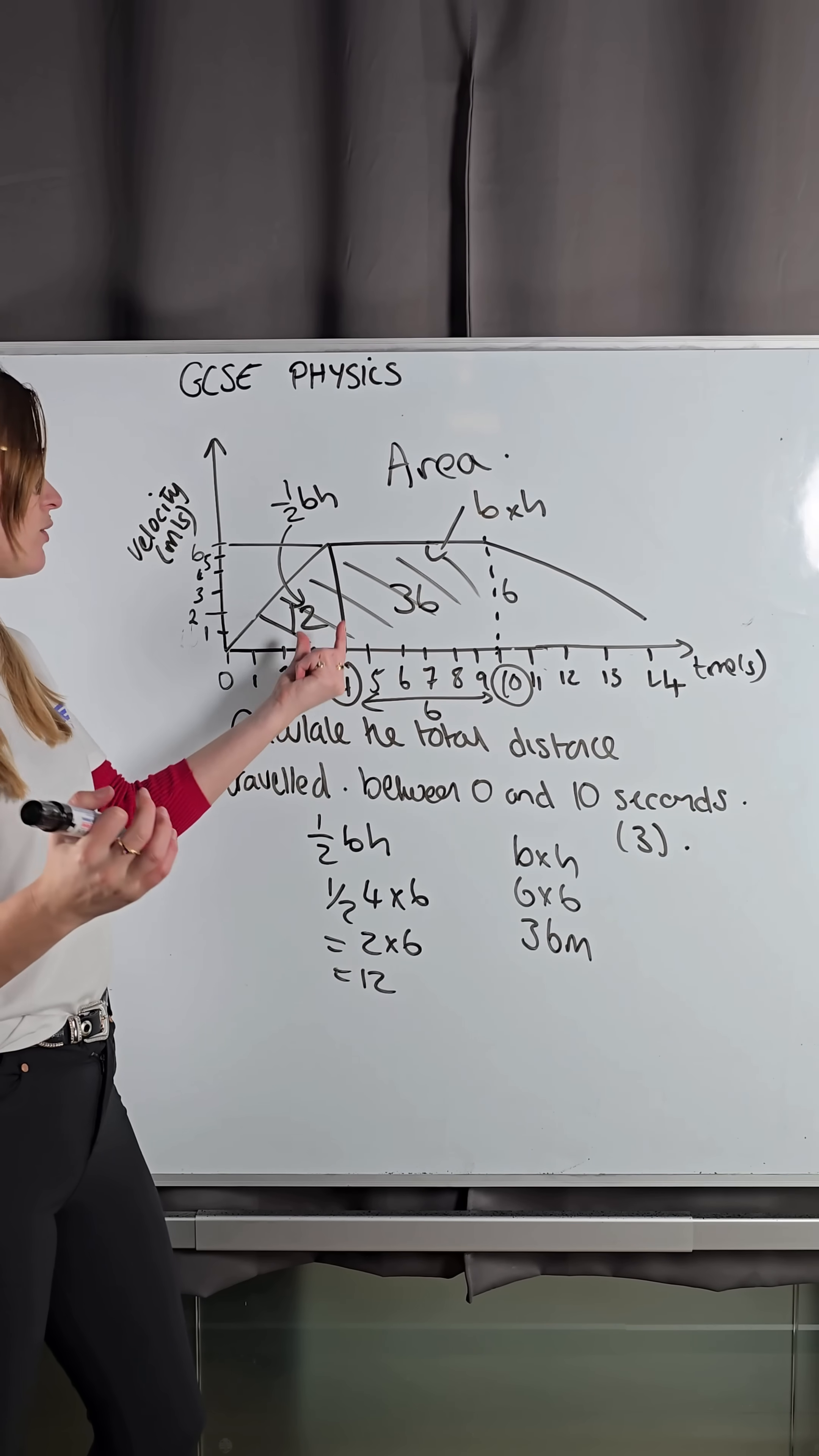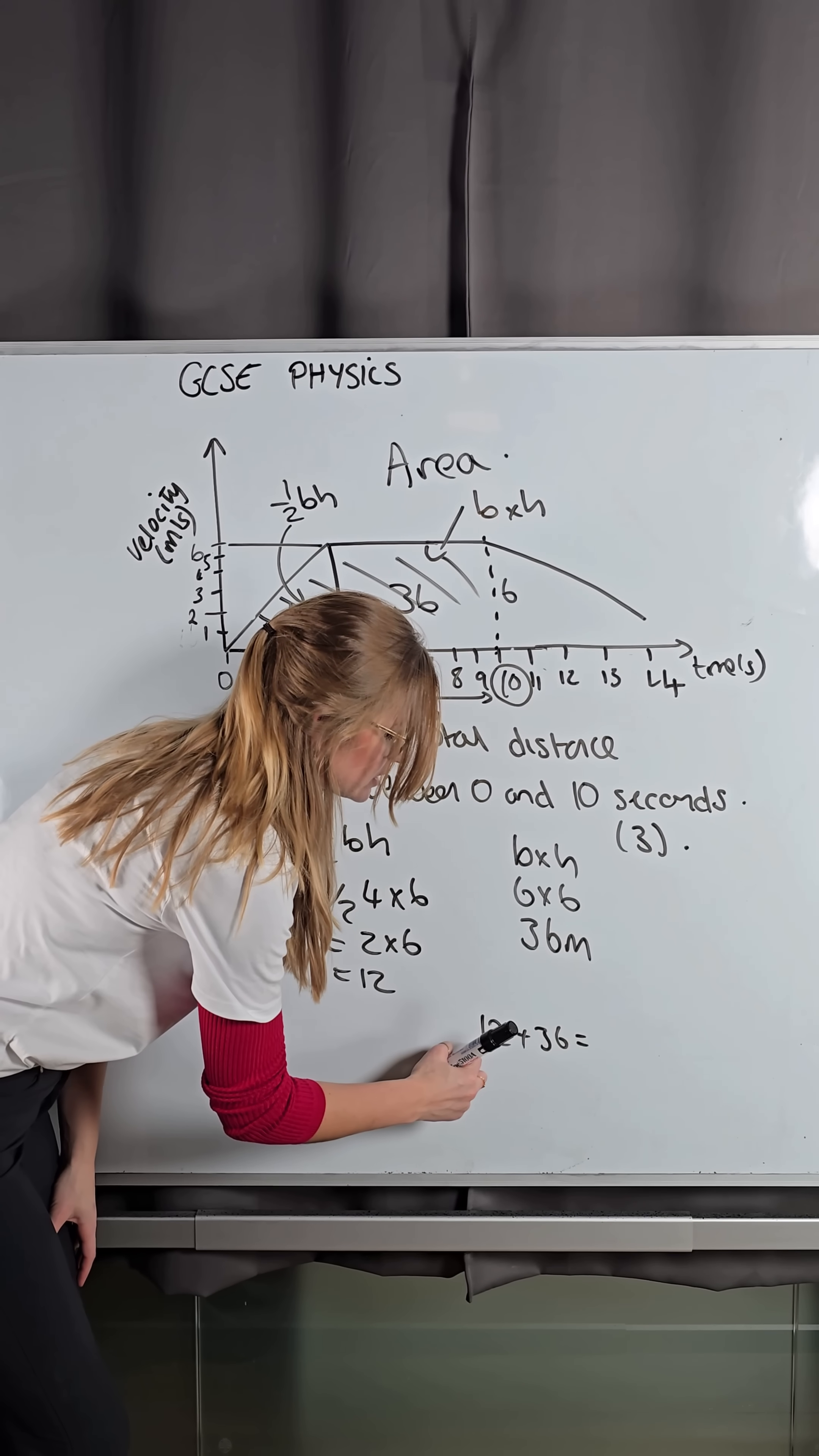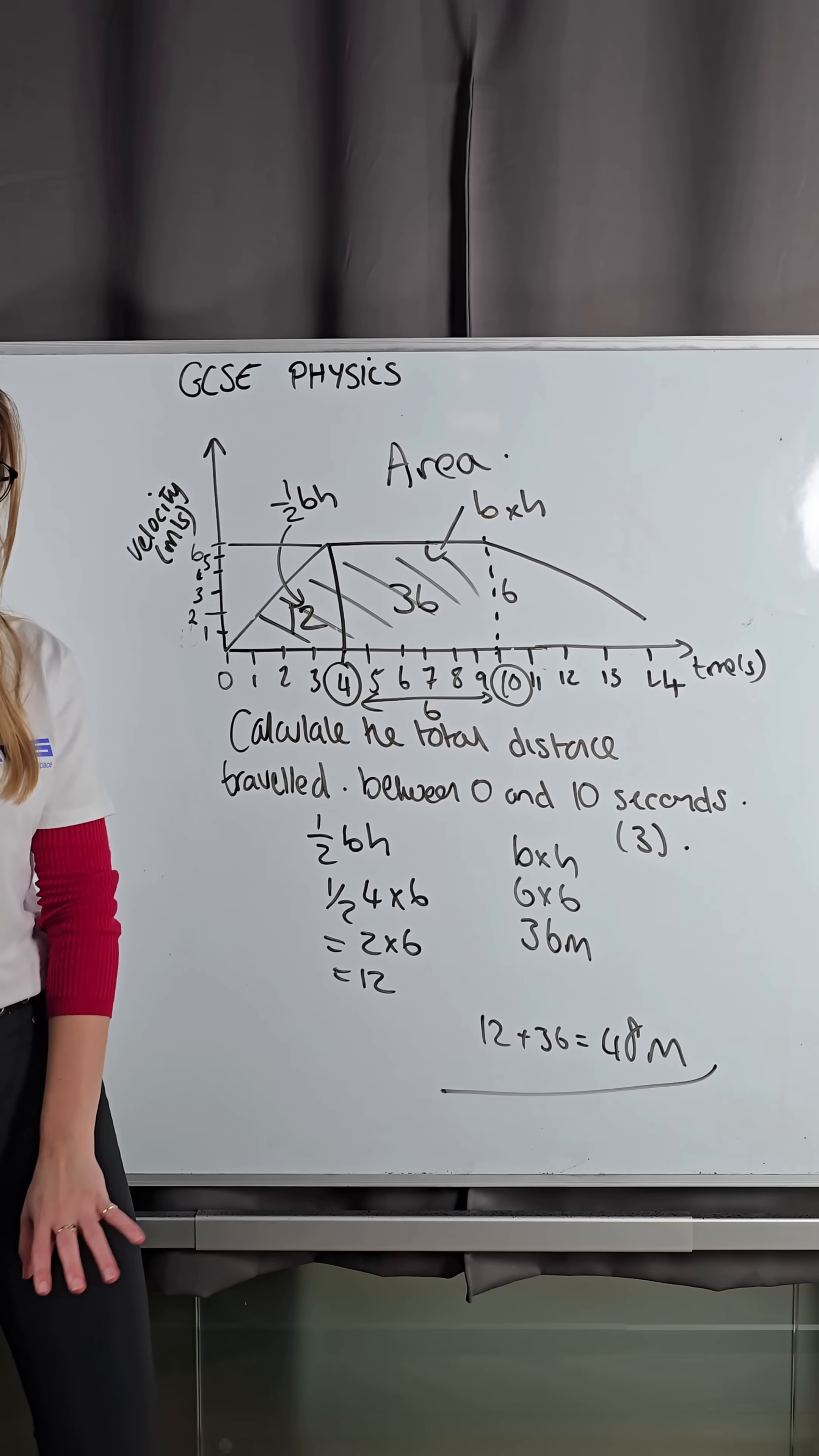Now, to find the total area, we just need to add them together. So I'm going to do it as 12 plus 36, 36, 46, 48 meters. Because distance is always measured in meters.